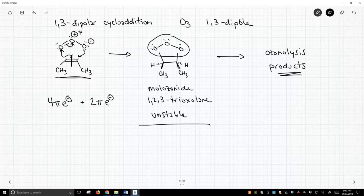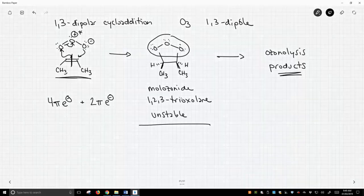We will look at later examples where it's nice to see you form a ring and that ring is stable. We'll see some examples where the ring is actually stable and we can isolate that product.